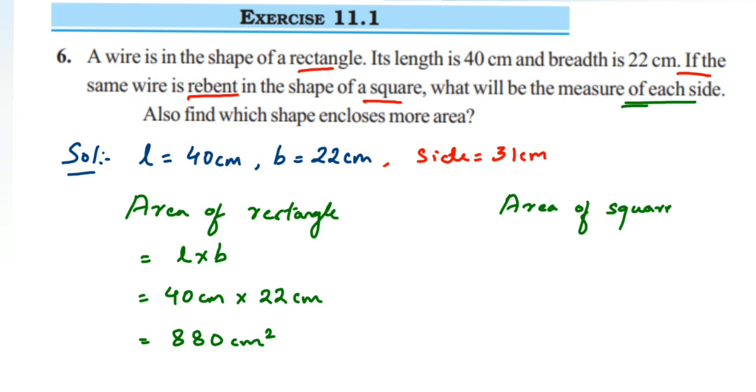Area of square is side squared. Side we got is 31, so 31 centimeters squared.